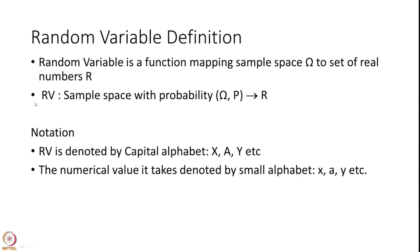A random variable is a function mapping a sample space omega to a set of real numbers R. So a random variable is a sample space with a probability P mapped into a real line, real number R. The notation we are going to use from now on is: all capital alphabets X, Y, etc. will be called random variables, and the actual numerical values that they take will be denoted by small alphabets.